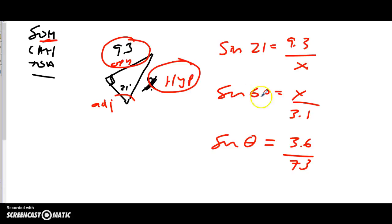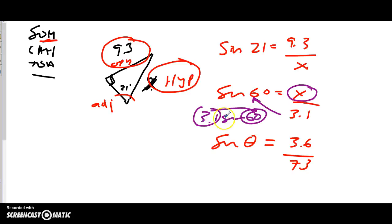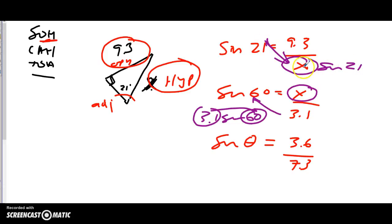If x is on top but not by itself, bring the denominator up: x equals 3.1 times sine 60°. Be careful not to multiply 60 × 3.1 first and then take sine of 186 — that's wrong. Use your calculator as: 3.1 × sin(60°) = . If the unknown is on the bottom, swap it: bring x up and sine 21° down, giving x = 9.3 ÷ sin(21°). On the calculator: 9.3 ÷ sin(21°) = .